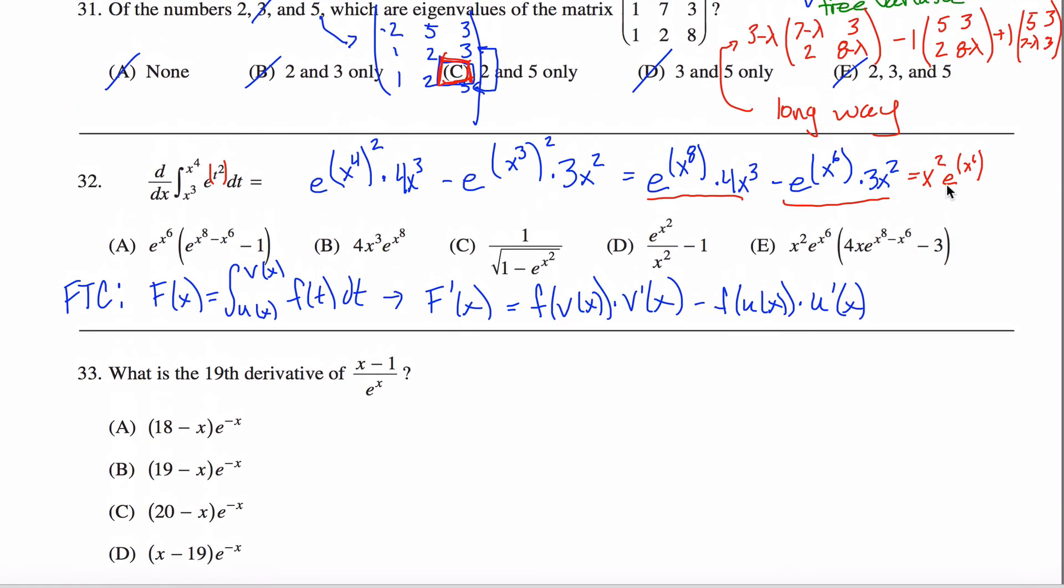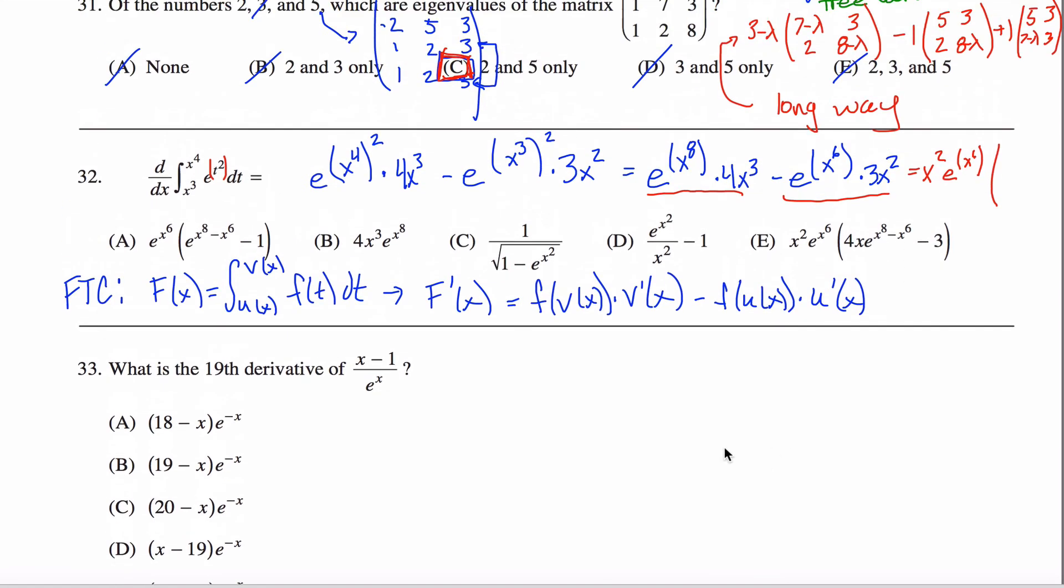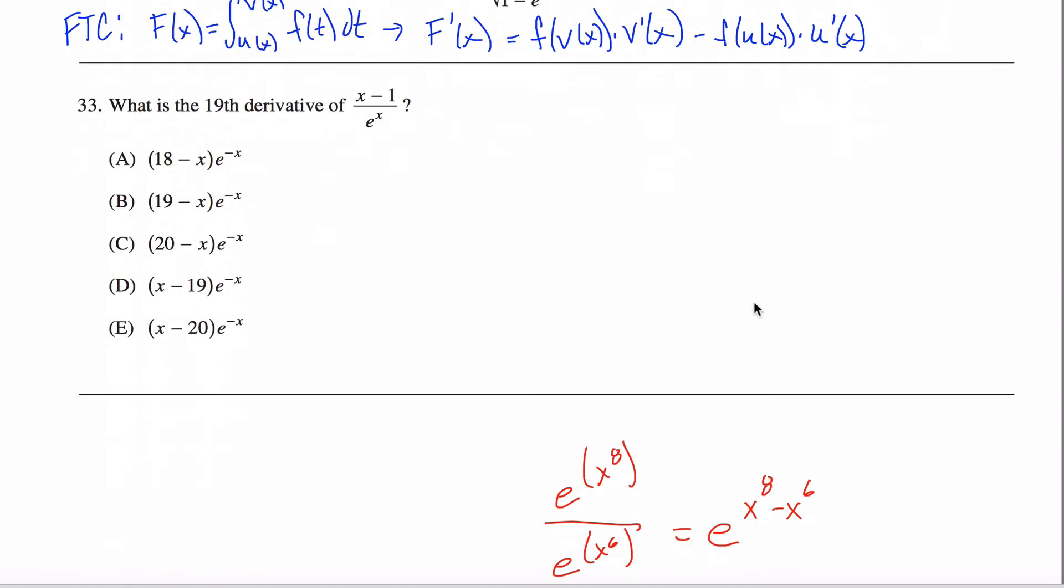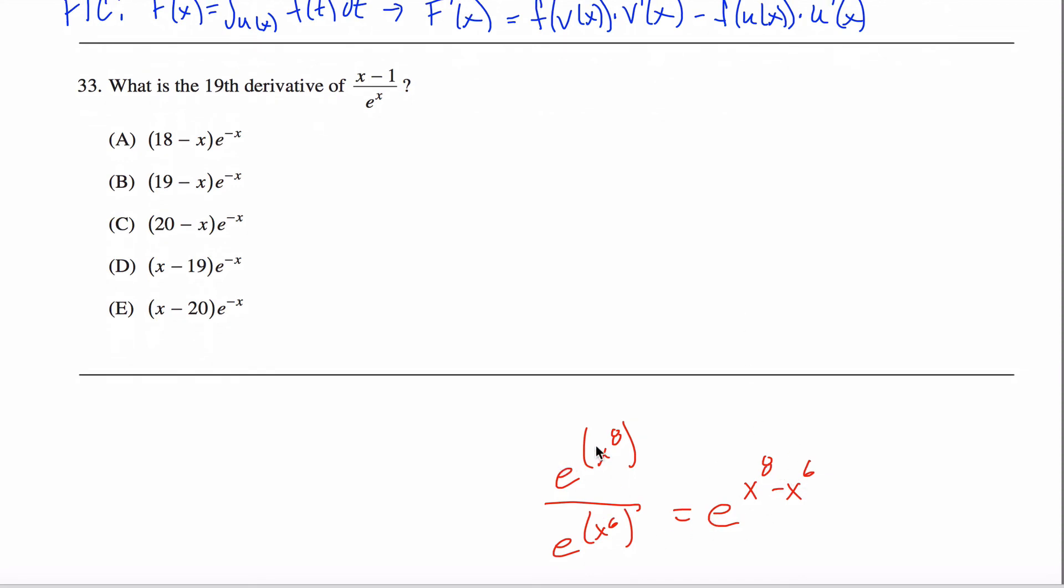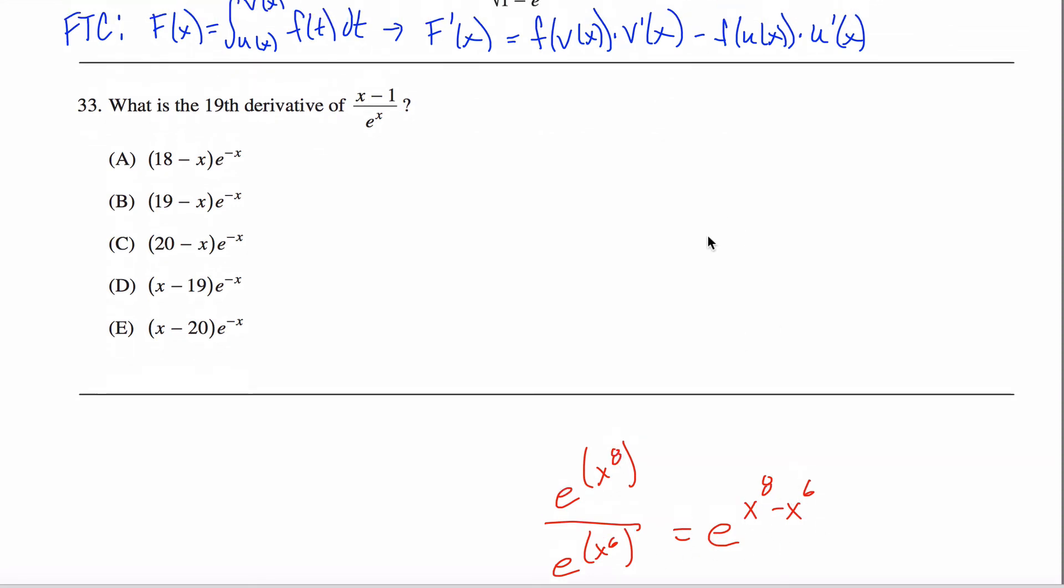So, if I am to factor out E to the X to the 6th here, what I would have left over would be, well, it'll be exactly this. From the E to the X to the 8th, I'd have this thing left over.